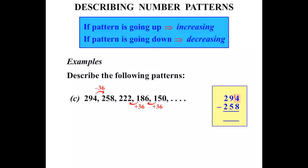So look at the 4. We need to borrow 1 and trade it against the 9. Let's cross it out and make it an 8. So 14 minus 8 is 6. 8 minus 5 is 3. 2 minus 2 is nothing. So we have 36 as a difference.